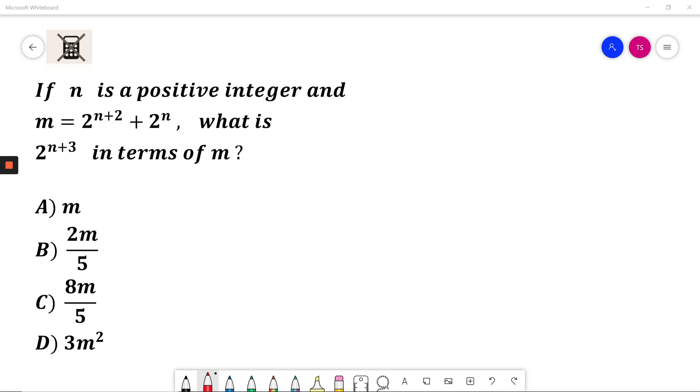If n is a positive integer and m equals 2 to the power of n plus 2, plus 2 to the power of n, what is 2 to the power of n plus 3 in terms of m?